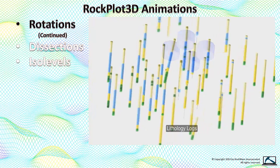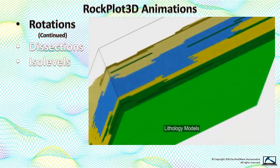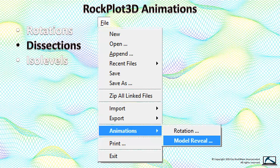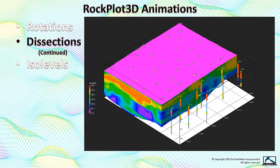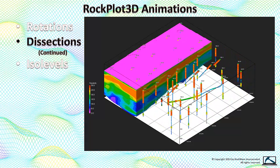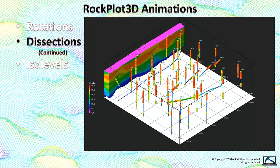Anything that can be shown within RockPlot 3D can be rendered within a rotational video. The Model Reveal option, which I call dissections, is also accessed from the RockPlot 3D File Animations submenu. With this program, you select the model to be sliced and the relative direction of the slicing. The output can be fairly dramatic and very illustrative, especially if you watch it repeatedly.